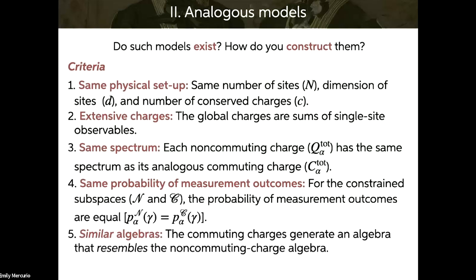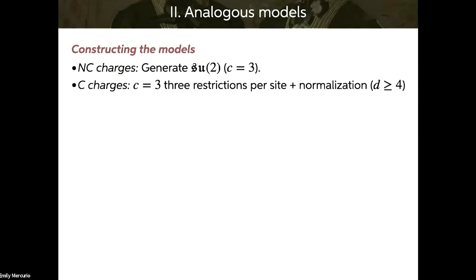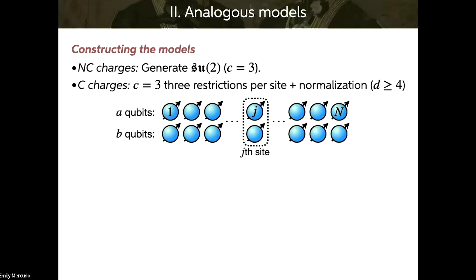Let me show the analogous models by constructing them. We start from the non-commuting picture with three charges, because we're going to work with the simplest non-abelian symmetry, SU(2). In the commuting picture, we also have three charges — three restrictions per site plus one for normalization — so D is at least four. The simplest setup is sites with pairs of qubits, where the top row is the A qubits and the bottom row is the B qubits. I use superscripts j in parentheses to denote local operators.